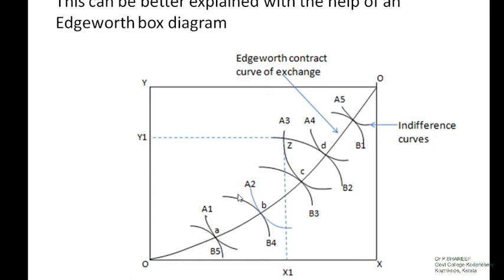We can explain the efficiency in exchange with the help of an Edgeworth box diagram. In the diagram, we can show two commodities X and Y, and the preferences of two individuals, individual A and individual B. The preference of the first consumer is shown with the help of indifference curves A1, A2, A3, A4, and A5. Similarly, the preference of the second individual is shown with the help of indifference curves B1, B2, B3, B4, and B5. By joining the tangency points of the indifference curves, we will get the Edgeworth contract curve of exchange.